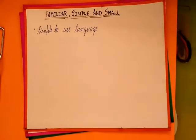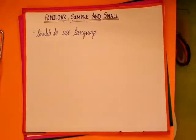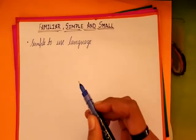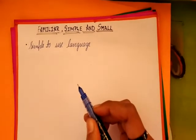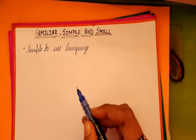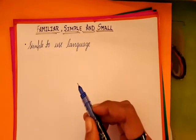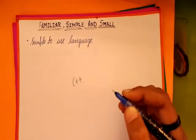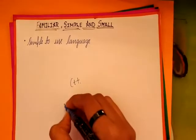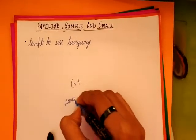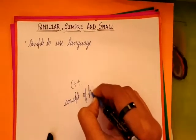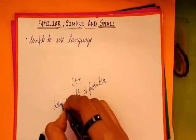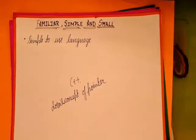The next feature is Familiar, Simple and Small. Java is a simple language to use. It is familiar and also small compared to C and C++. The syntax is based on C++, and it also doesn't have the concept of Pointers, which makes it more simple to learn.